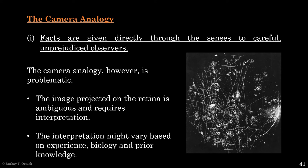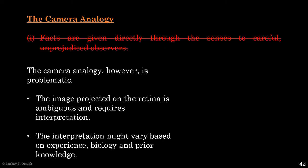So what we see isn't just what is reflected on the retina. The brain has to interpret the retinal image to see. And that interpretation varies based on experience, biology, and prior knowledge. That means facts are not given directly through the senses. There are mental processes that we aren't even aware of, which pick up the retinal image, or the vibrations on the eardrum, or the stimulation of the nerves on our skin, and interpret that data.